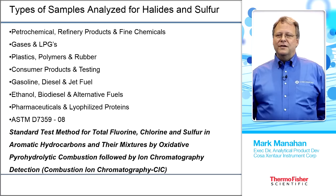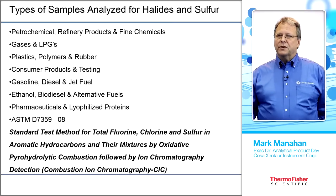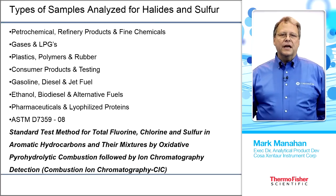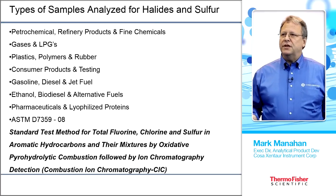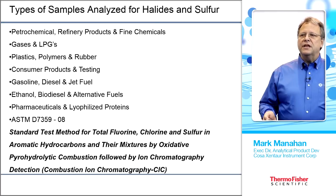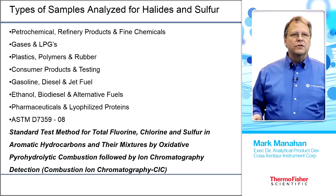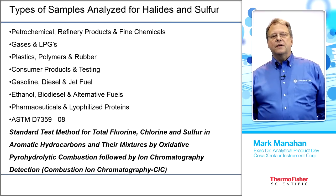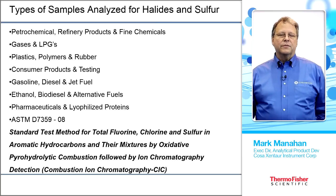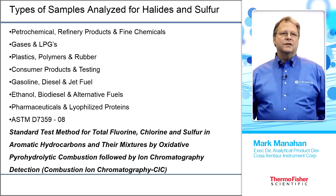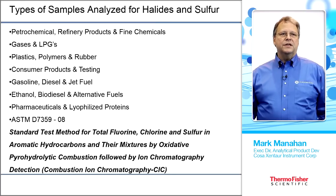Thank you, Kirk. Here we have some typical samples for combustion ion chromatography: petrochemicals, gases and LPG, gasoline and diesel, and pharmaceuticals. The ASTM-approved method for combustion IC is D7359, which is a D16 aromatics method for combustion IC.